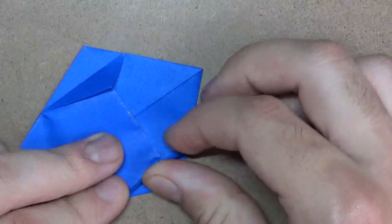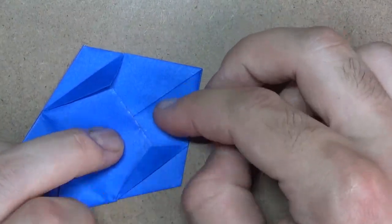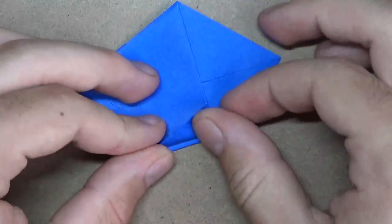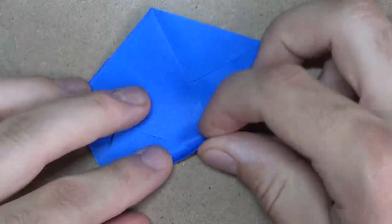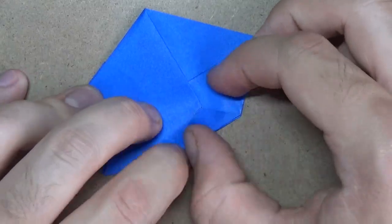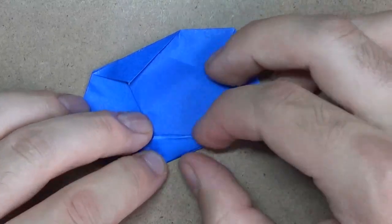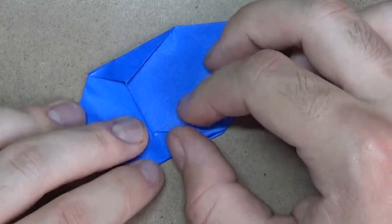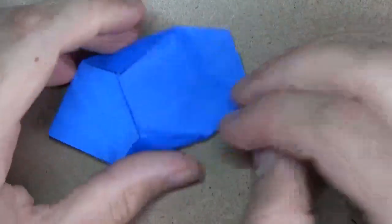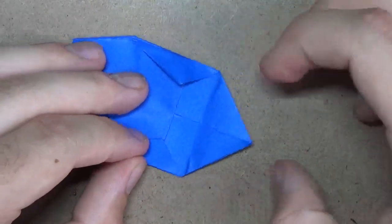All right. And repeat on the back side. And I'm folding it so it aligns with this edge below. All right. And now fold this up in between these two points.